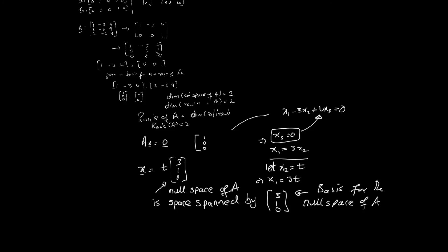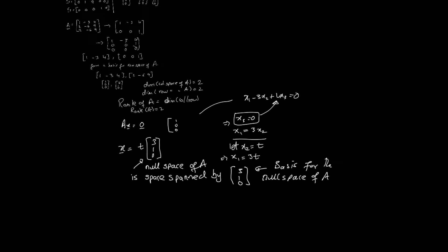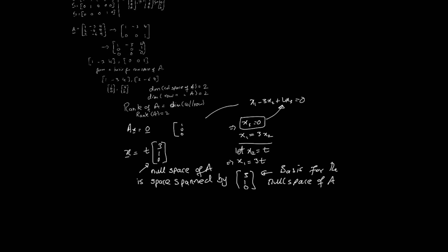Now, the dimension of the null space is called the nullity of A. The nullity of A is the dimension of the null space, and in this example, the nullity of A is 1.